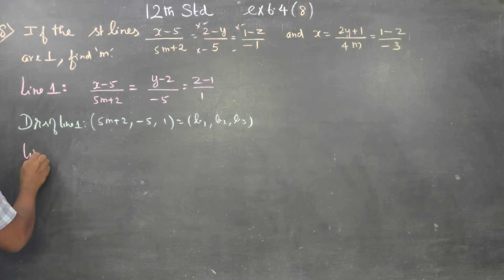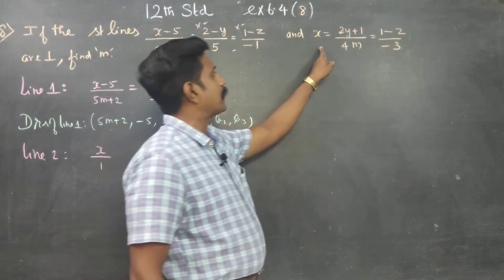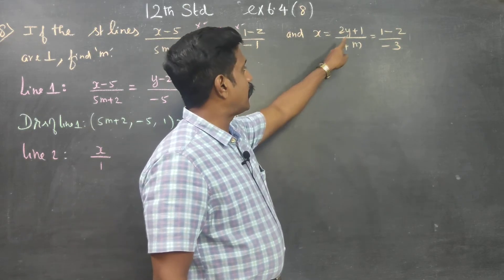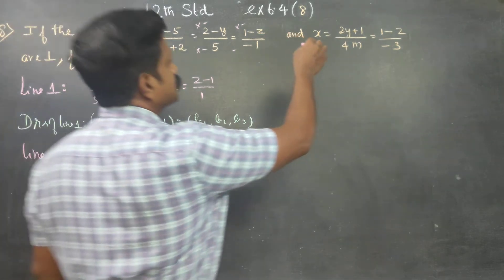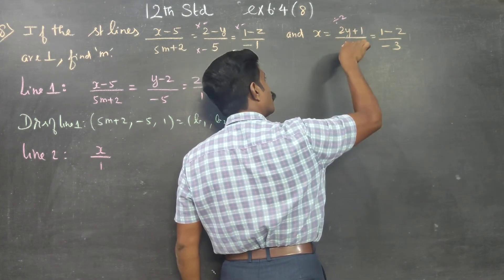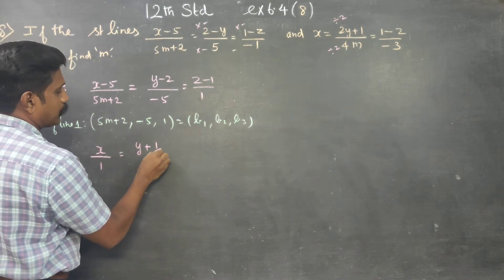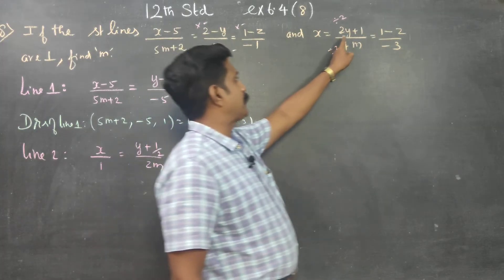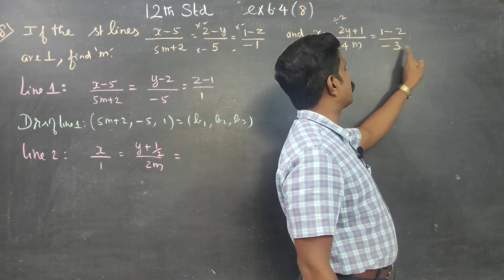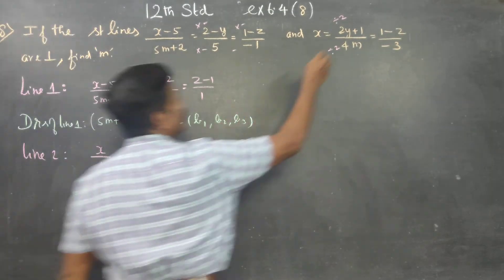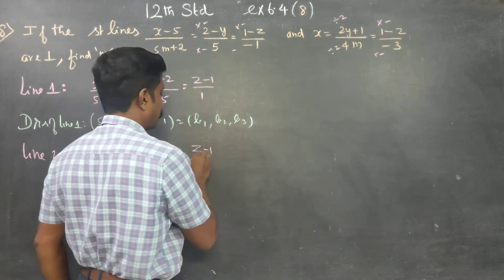Now proceed to line number 2. The standard form gives x by 1, then for the y-term, I am going to divide all the terms by 2 — numerator as well as denominator — so 2 divided by 2 gives y plus 1 by 2m. This is the standard form. Then multiply the z-term by minus to get z plus 1, then minus 1 by plus 3.